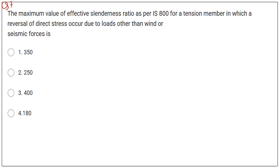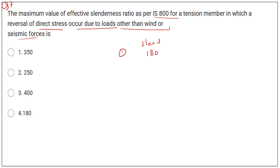Question number seven: the maximum effective slenderness ratio as per IS 800 for a tension member when reversal of direct stress occurs due to loads other than wind and seismic. From the chart discussed in question five, for loads other than wind and seismic, the slenderness ratio is 180. So the last option, 180, is correct.